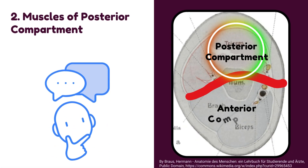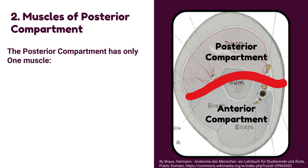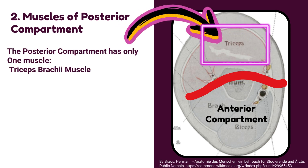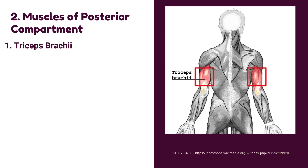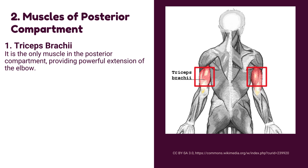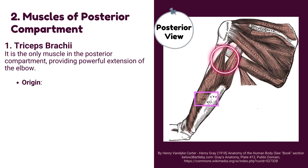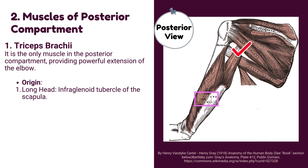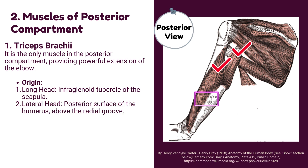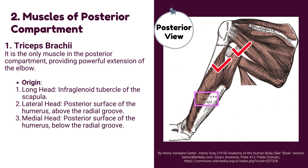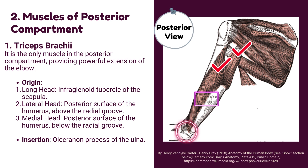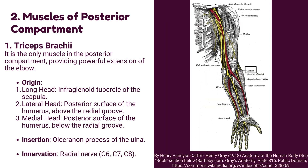Now we will discuss the muscles of the posterior compartment. The posterior compartment has only one muscle: triceps brachii muscle. It is the only muscle in the posterior compartment, providing powerful extension of the elbow. Origin: its origin has three heads. Long head originates from the infraglenoid tubercle of the scapula. Lateral head originates from the posterior surface of the humerus above the radial groove. Medial head originates from the posterior surface of the humerus below the radial groove. Insertion: it is inserted into the olecranon process of the ulna. Innervation: it is innervated by the radial nerve.